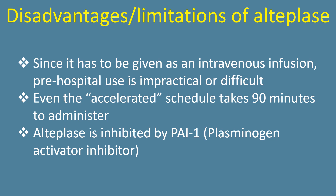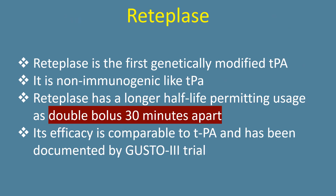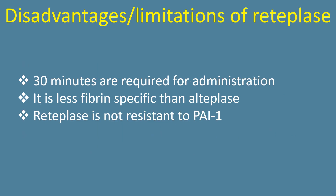Alteplase is inhibited by plasminogen activator inhibitor PAI-1. Reteplase is the first genetically modified TPA. It is non-immunogenic like TPA. Reteplase has a longer half-life, permitting usage as a double bolus 30 minutes apart. Its efficacy is comparable to TPA and has been documented by the GUSTO-3 trial. Disadvantages: 30 minutes are required for administration, it is less fibrin-specific than Alteplase, and Reteplase is not resistant to PAI-1.